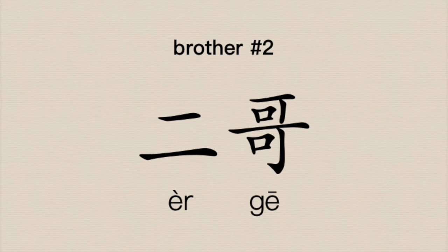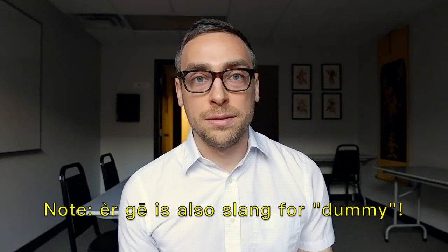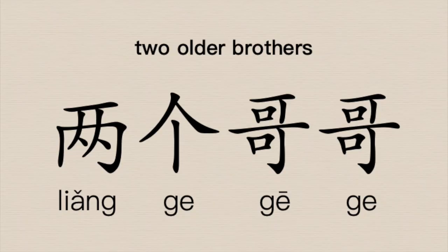Let me give one more example of how 二 names something and 两 counts something. 二哥 — this refers to the second son or second older brother. In a family, if we want to refer to the second-born brother, we say 二哥 — using 二 to give a nickname to that second brother. 第二个哥哥 — the second brother. That's just one person; we're not counting two people. If we wanted to give a quantity of older brothers, we'd say 两个哥哥 — two older brothers. 我有两个哥哥 — I have two older brothers.